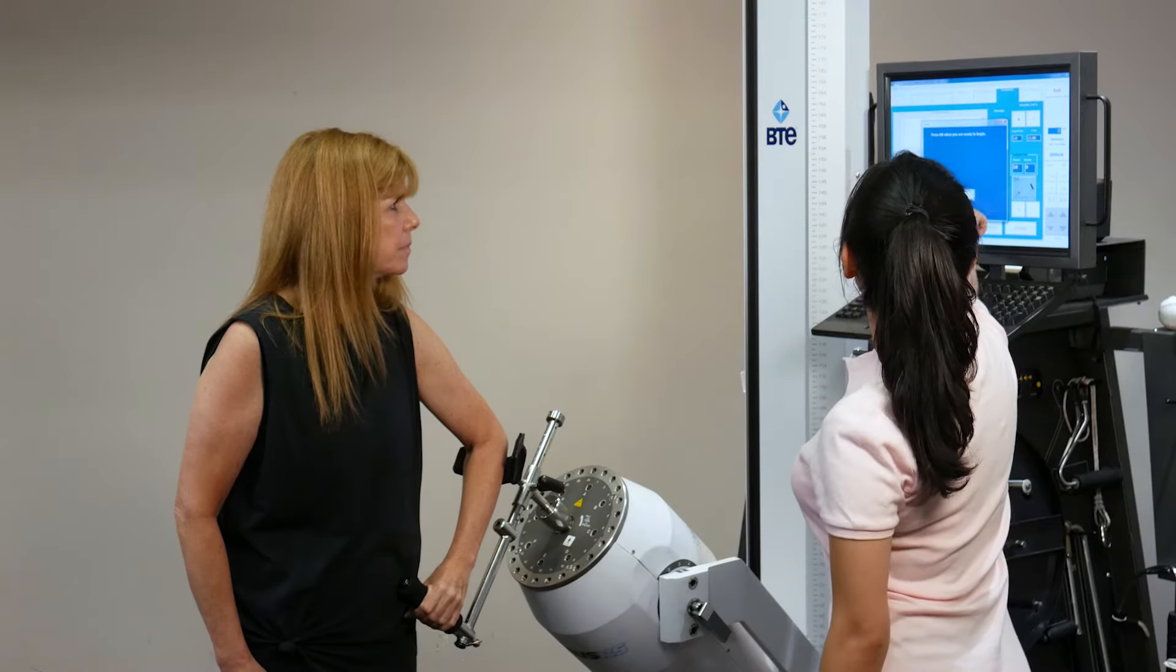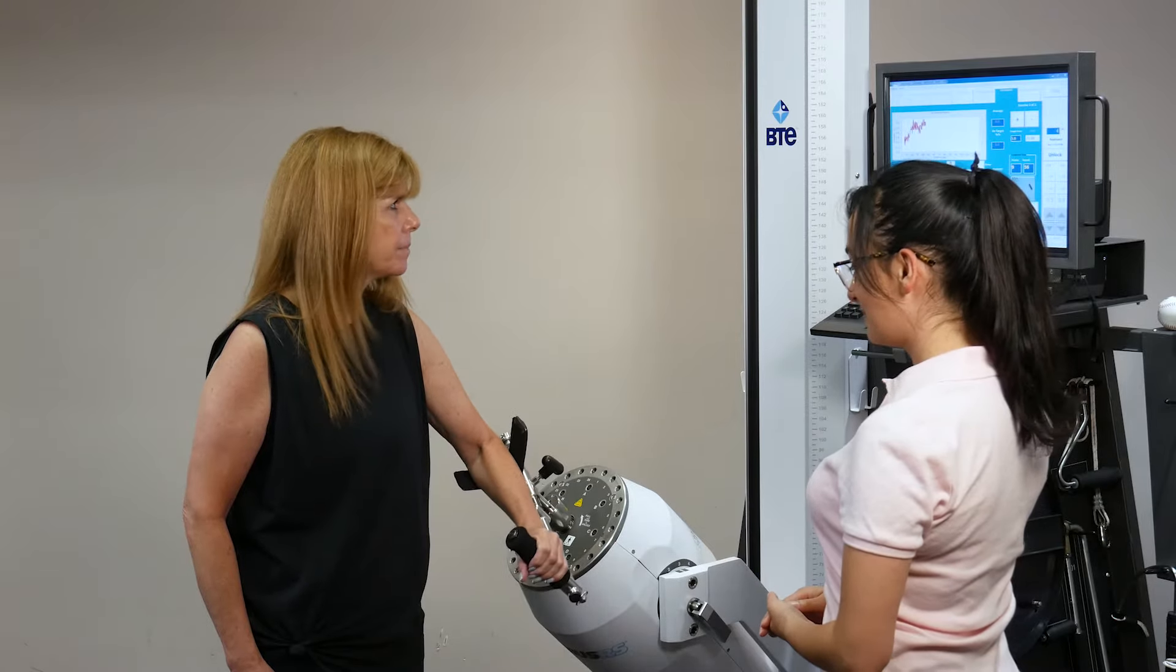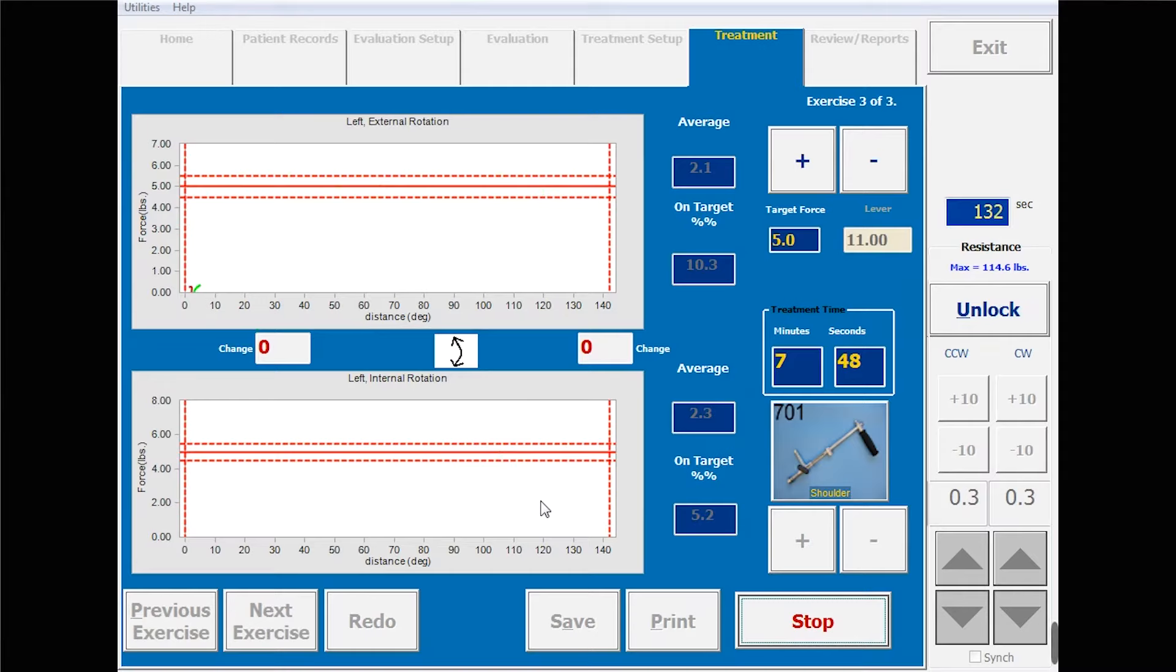The primus will provide assisted movement through the defined range of motion. The system does not actually exert force on the client, but it measures the force that the client generates through the assigned range of motion and their ability to stay inside the target force range.